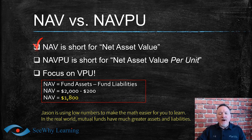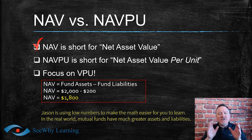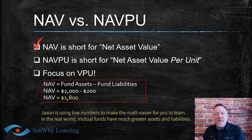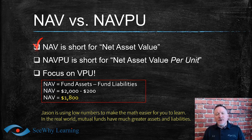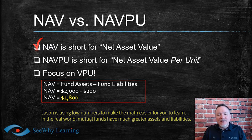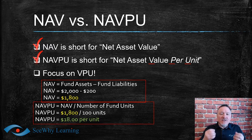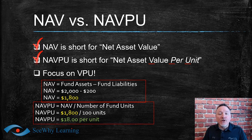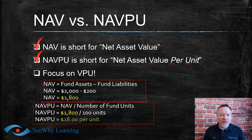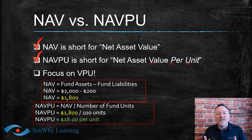NAVPU is short for net asset value per unit or per share. It combines the NAV with how many units or shares all investors currently own. Using our previous example, if there are 100 units outstanding, the NAVPU is $1,800 NAV divided by 100 units — which works out to $18 per unit.